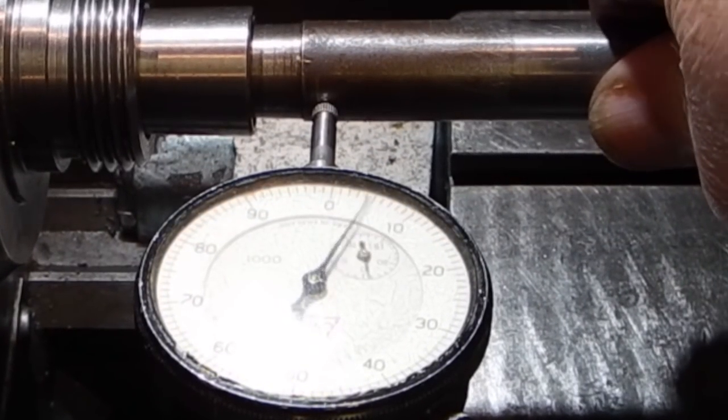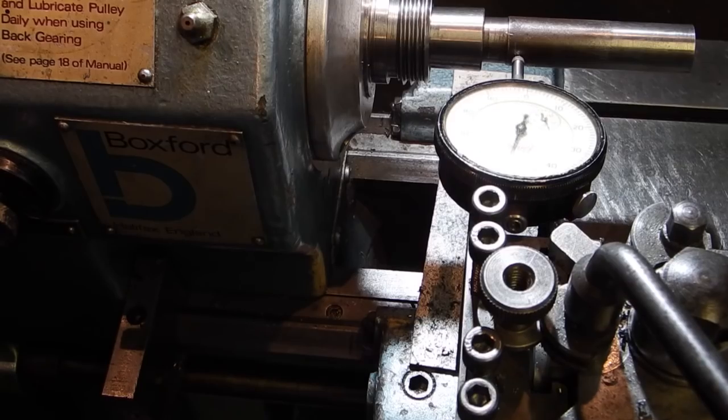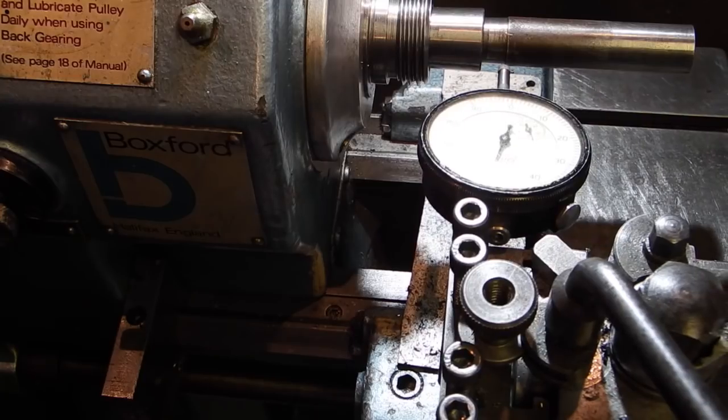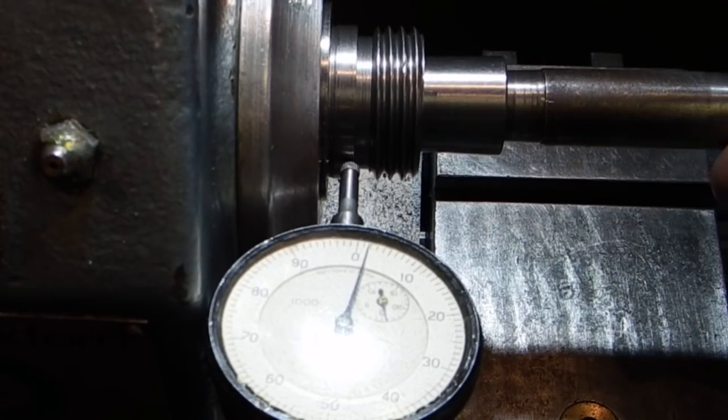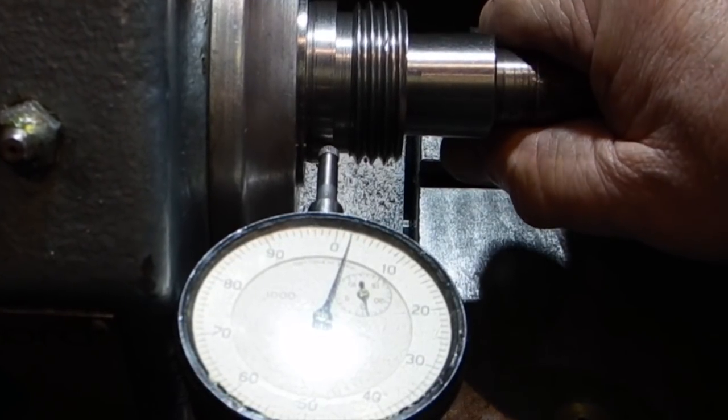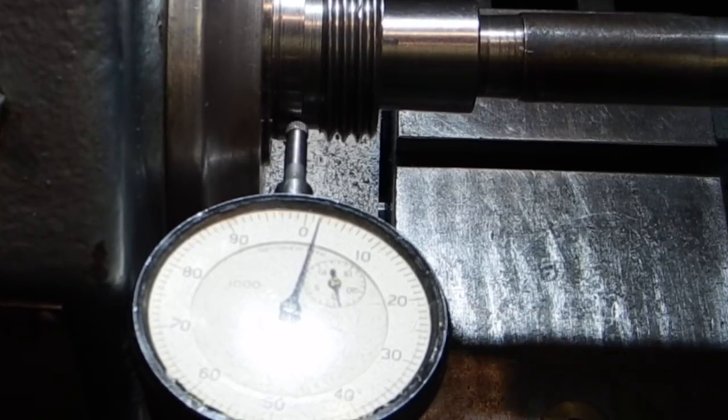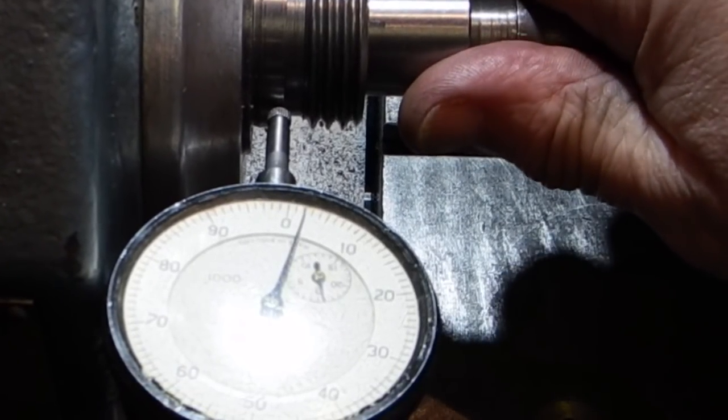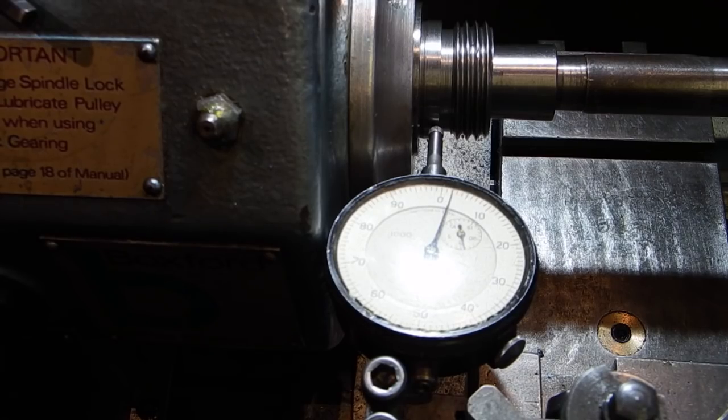It's about a thou. If you move your dial indicator out to this end the play will be more, and if you move your dial indicator down towards the headstock you'll see that the reading is reduced. So by using a test piece like this you're actually magnifying the reading. This is the true reading on the end there which is about a tenth. Now I'm happy with that because it's not giving me any problems.